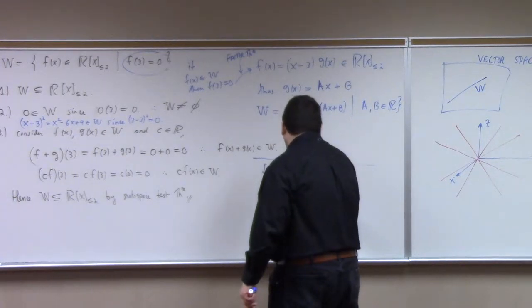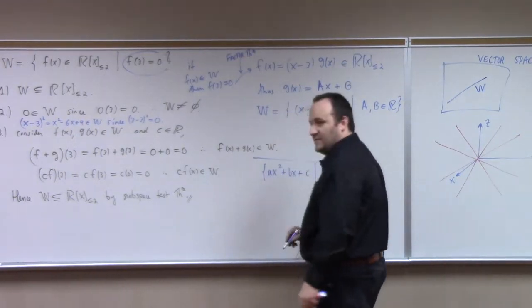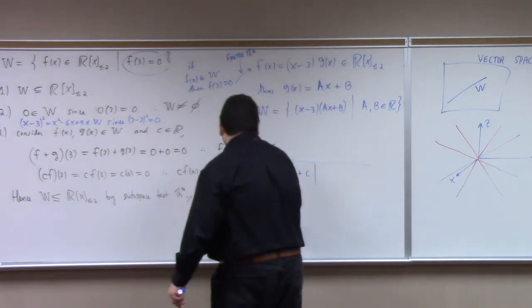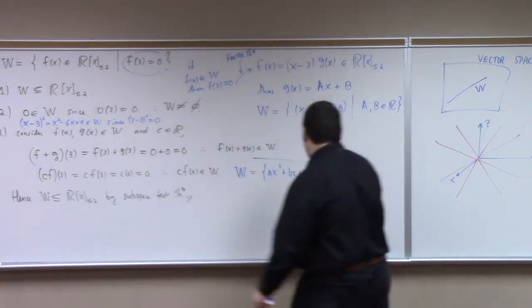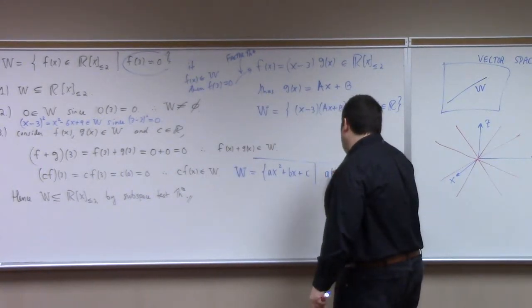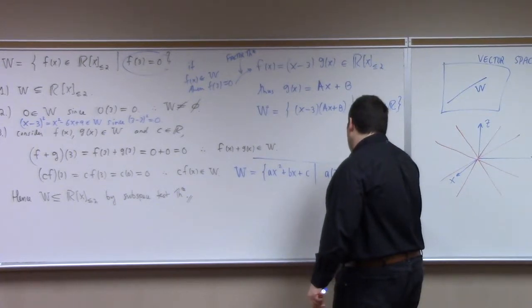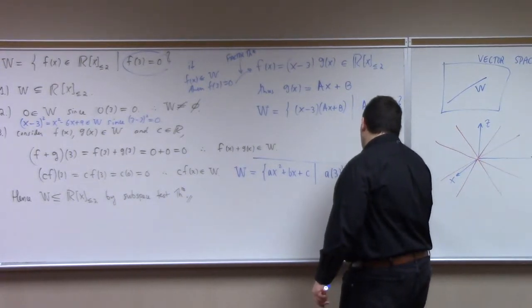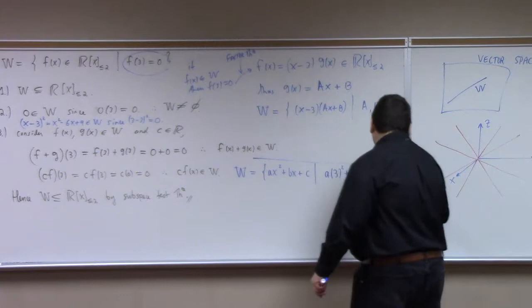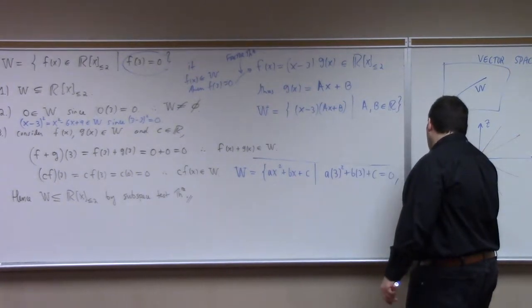plus bx plus c, right? Such that what? What's the condition for w? We could also write it out. Such that a times 3 squared plus b times 3 plus c is equal to 0, right? I mean that is logically equivalent.